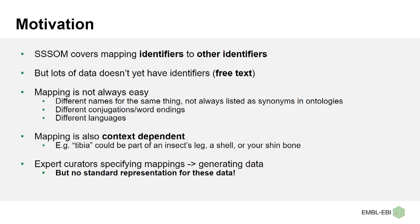Mapping from free text isn't easy. There are lots of different names for the same thing — sometimes these are listed as synonyms in ontologies, but not always. You've got problems with language in general, like different conjugations and word endings that need to be handled, and different languages. The mapping is also context-dependent: the same string, depending on who you are, can mean something very different, and you want to map it to a different identifier.